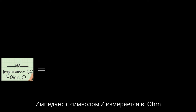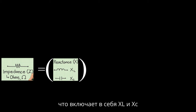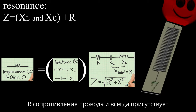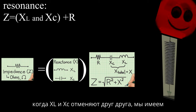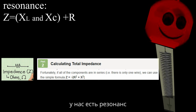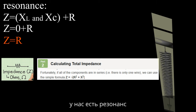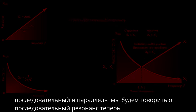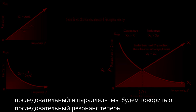Impedance, with symbol Z, is measured in ohms and is made up of total reactance X, which includes XL and XC. R is the resistance of the wires — it's always present. When XL and XC cancel each other out, we have pure coil resistance and we have resonance. We have two types of resonance: series and parallel, and we're going to concentrate on series now.